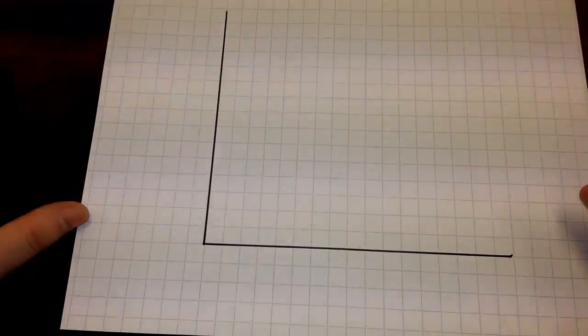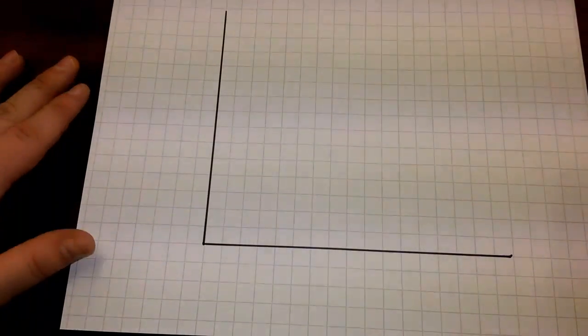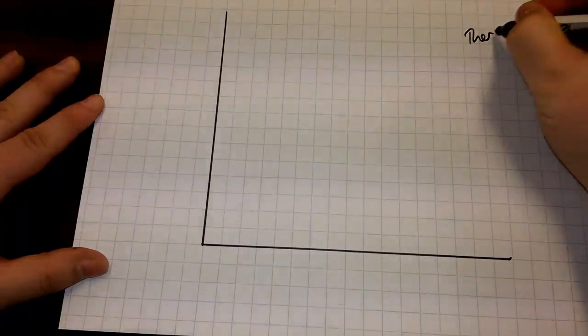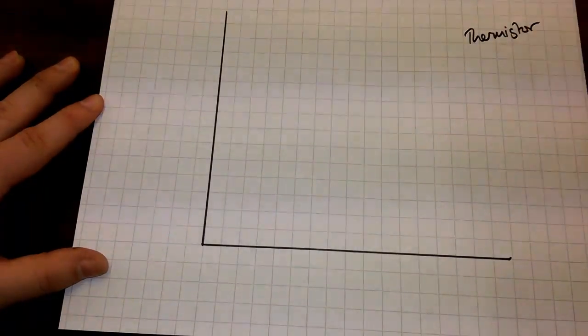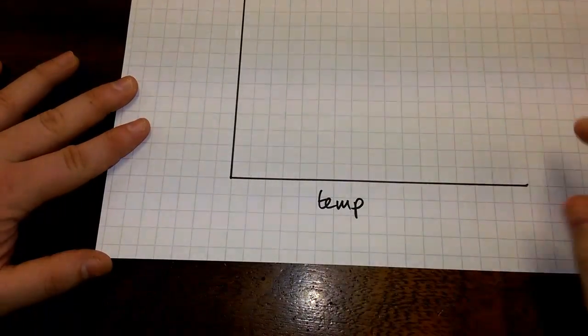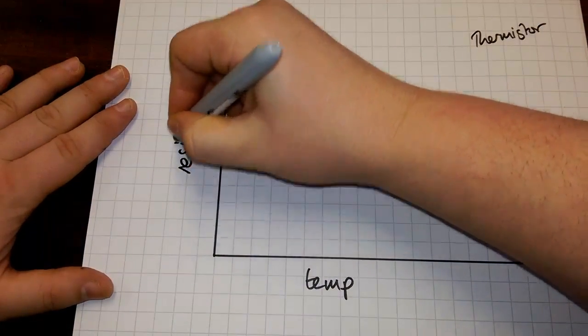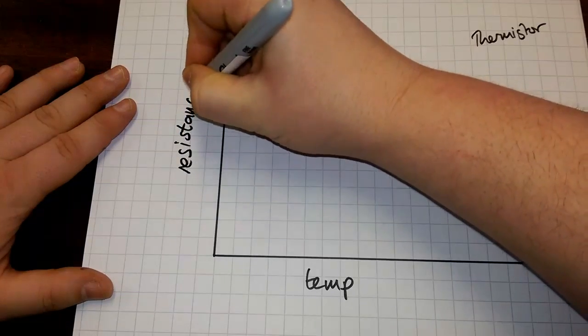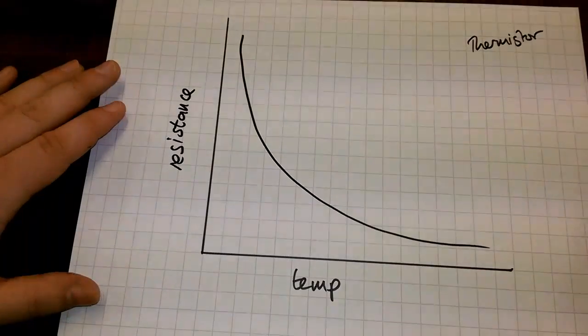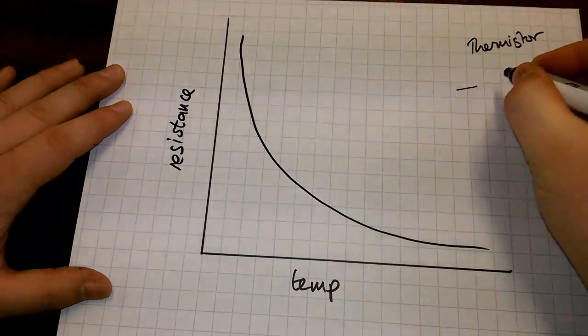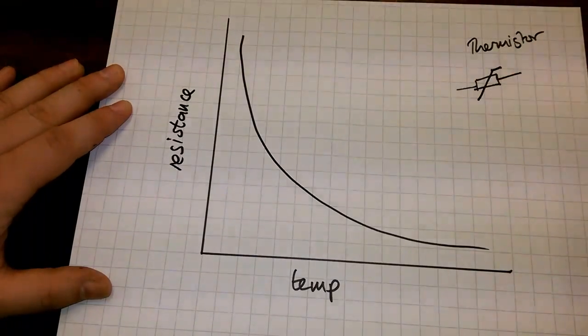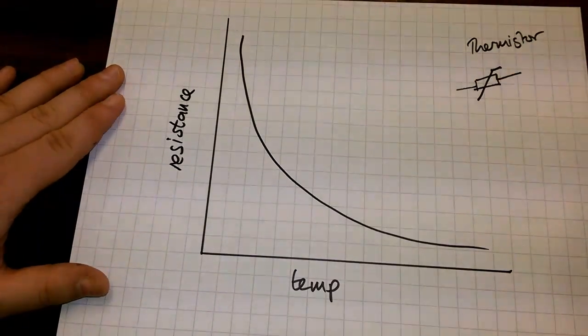So, I'm now going to show you the graphs that you need to be able to recognise for our LDR and our thermistor. They're very simple. Let me start you off with the thermistor, because that was the one I showed you first. The thermistor, as the temperature increases, its resistance decreases. And you can show that on the graph, just with that curve. The symbol for a thermistor looks like a little hockey stick going through a normal resistor.